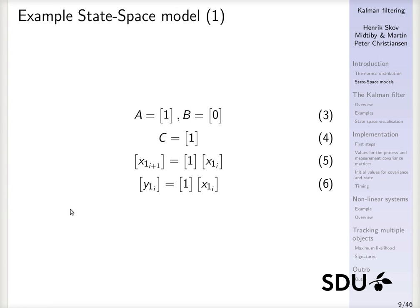A very simple state-space model has the state transition matrix A as the identity matrix with a single element, meaning the state is also a scalar or 1×1 matrix. There are no control inputs, so B is zero and we can leave that part out. When we measure on the system, C is given as 1, so we can measure directly on the system. We multiply by the matrix to get the new state, and to predict what we would measure we multiply again by C to get our measured value.